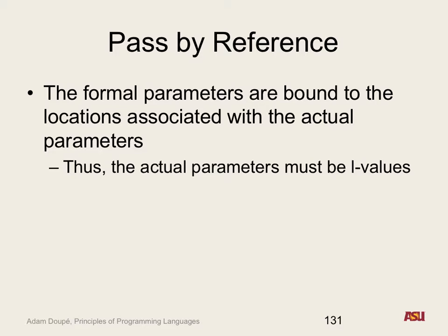The way to think about pass by reference is that instead of parameters having their own boxes, at function invocation time, the parameters are now bound to the same box that was passed in. This means the actual parameters must be L-values — we can never pass in an R-value to a pass-by-reference parameter. Why? We need a location, because we can write to that value. If you try to pass in 5 plus 10, that's not a location, that's just an R-value.